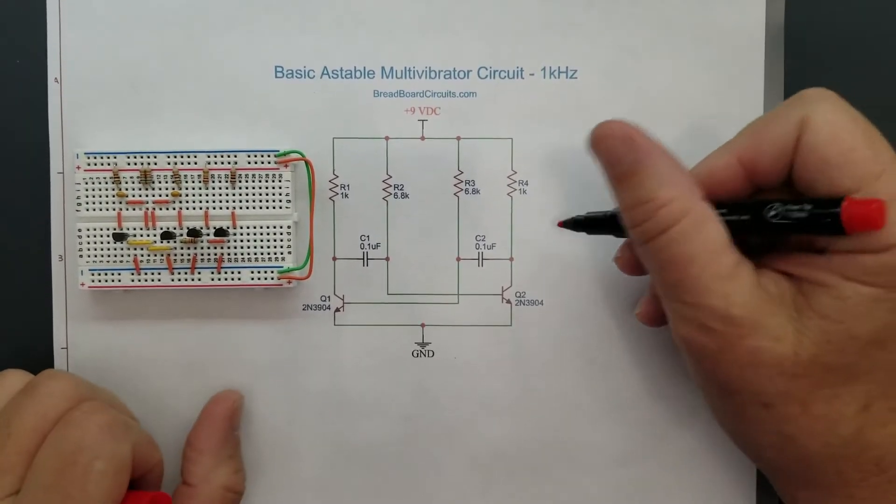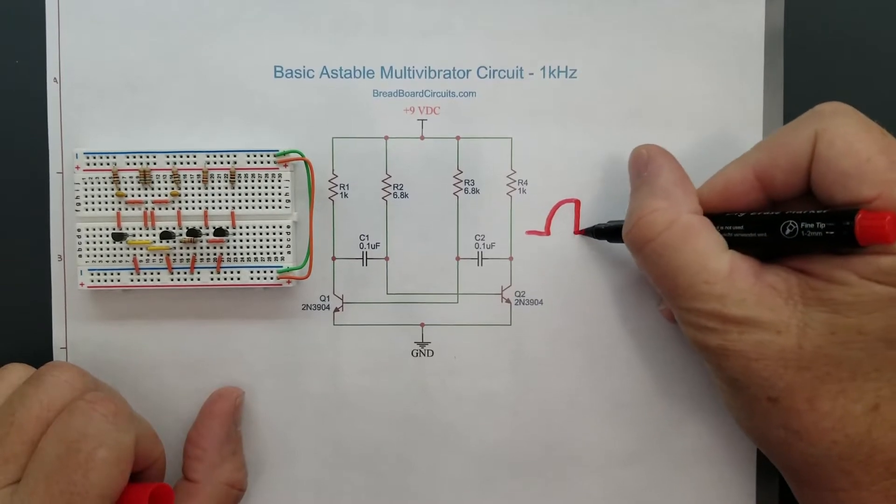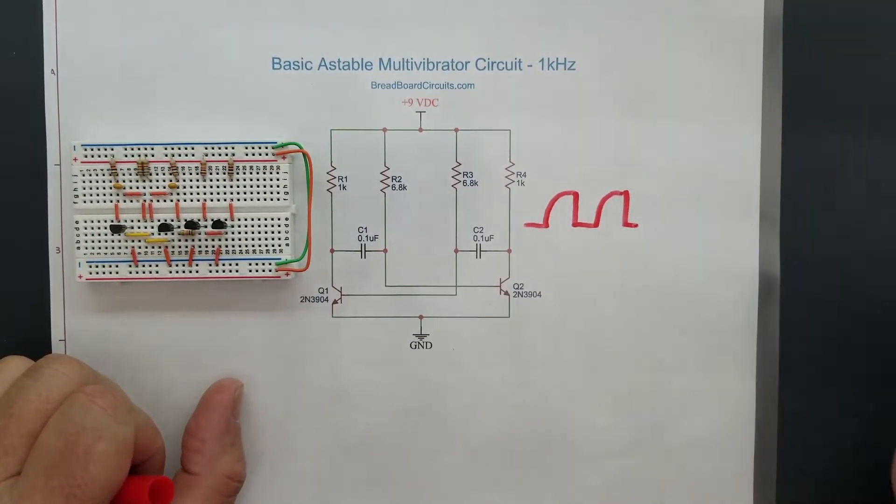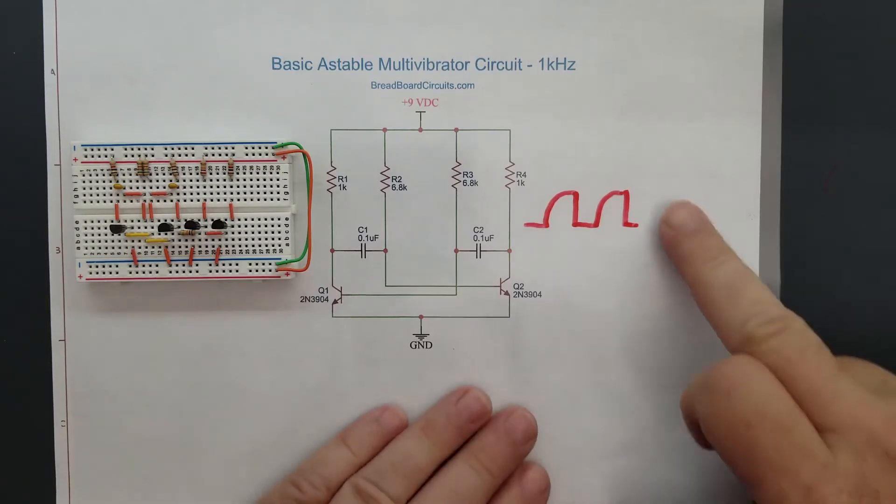On the basic astable multivibrator, you have a waveform that essentially looks like this, which is okay for flashing LEDs, but for just about anything else being used as a clock circuit or a driver for a higher current device load, it's not very useful.